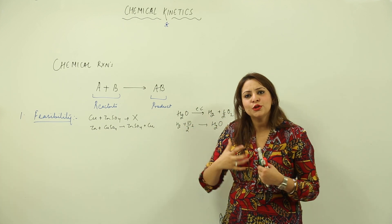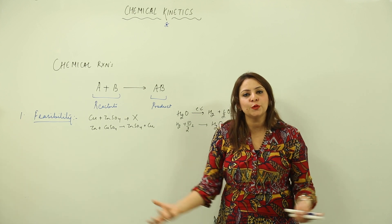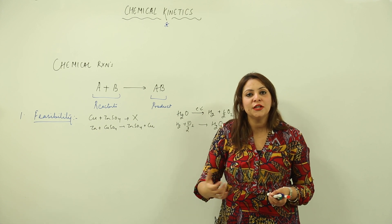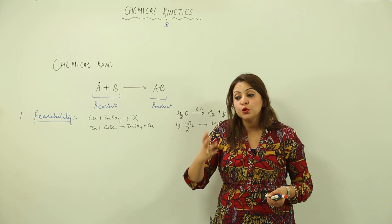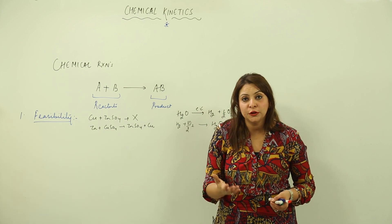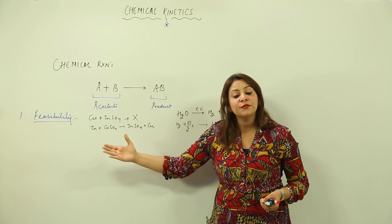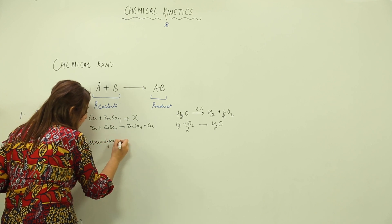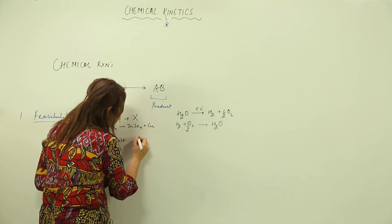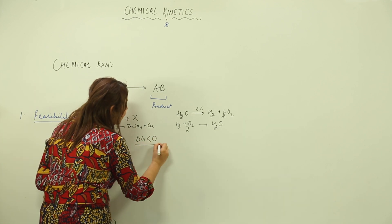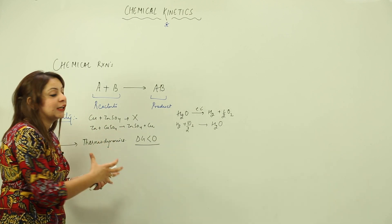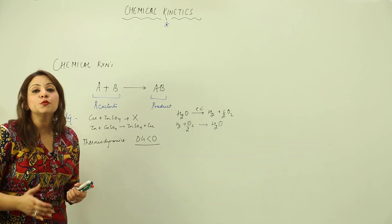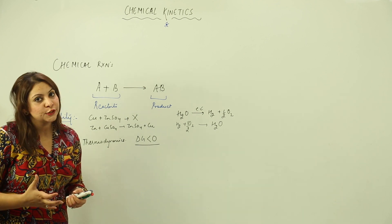When we want to know about feasibility, there are millions of reactions taking place in nature, and you may not always be certain whether a reaction will occur. We come to know about feasibility from thermodynamics — this is the reason we study thermodynamics. According to thermodynamics, when delta G is less than zero, the reaction is feasible. So from delta G less than zero, we come to know from thermodynamics about the feasibility of the chemical reaction.